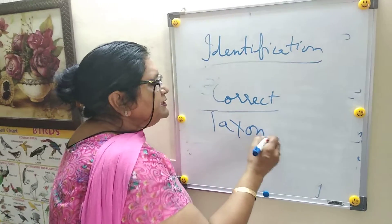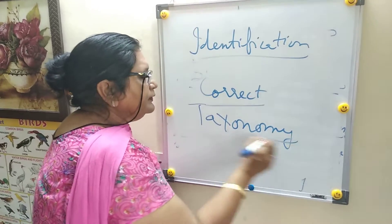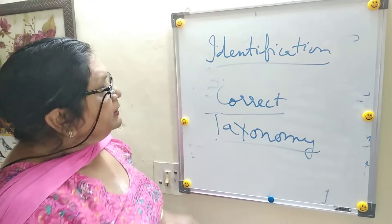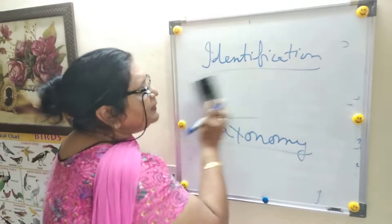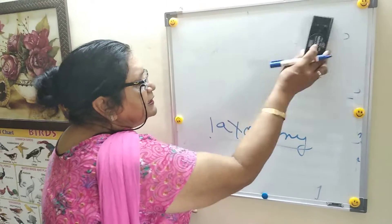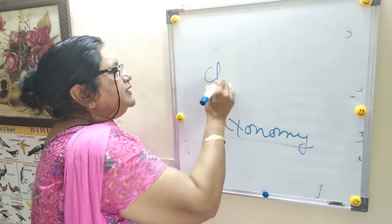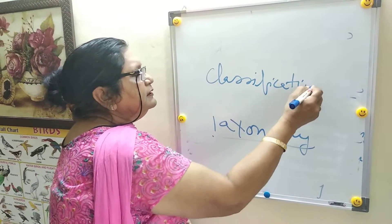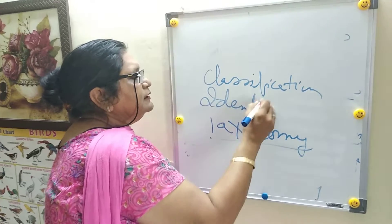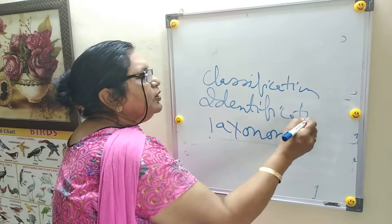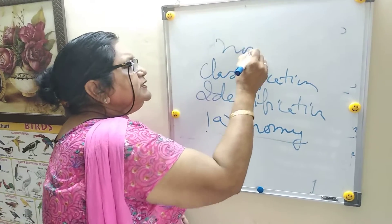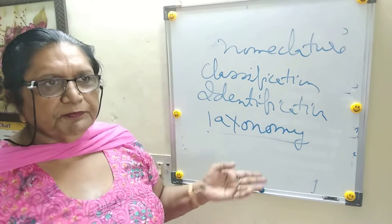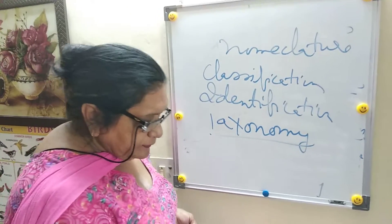The next important definition for the board is taxonomy. Taxonomy is the branch of science that deals with classification, identification, and nomenclature of living organisms. This is a very important definition for biology.